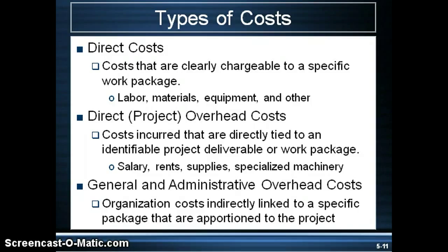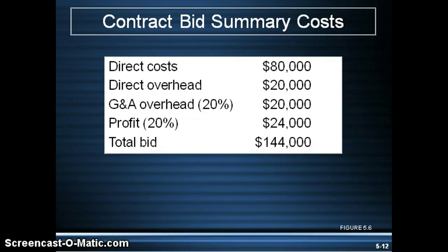Direct project overhead is generally a ratio or percentage of the value of the resources used — like say 20% of the direct project costs. General and administrative costs, or G&A overhead costs, are organizational costs that are not directly associated with the project, such as advertising, accounting, and senior management. These represent a percentage of the direct costs plus the direct project overhead costs.